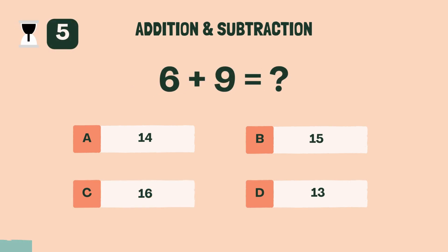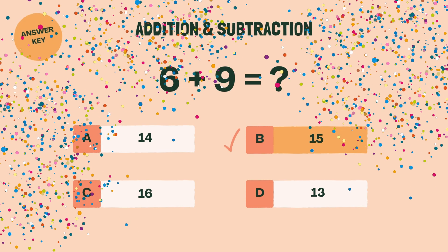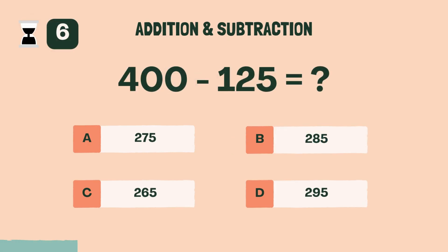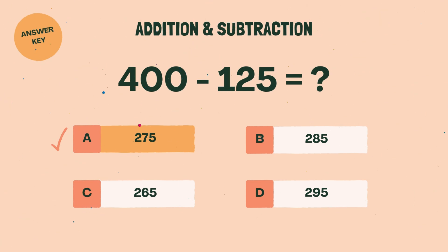What is 6 plus 9? B, 15. What is 400 minus 125? A, 275.